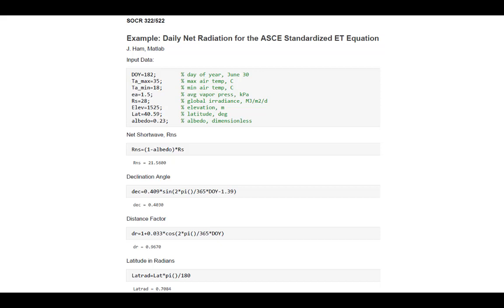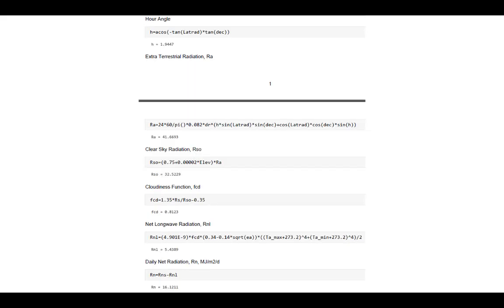Then I start that long process to get the net longwave. You see me calculating the declination angle, distance factor, converting my latitude to radians, calculating the hour angle, extraterrestrial radiation, clear sky radiation. Finally, I get the cloudiness function, which in this case was 0.81, so a pretty sunny day. Then I can finally calculate net longwave and then get the net radiation at the surface: 16.12 megajoules per meter squared per day. That's the number that would go into my reference crop ET formula.